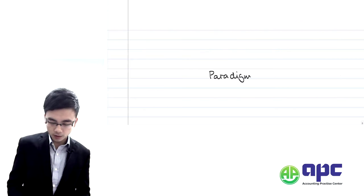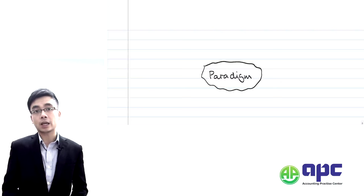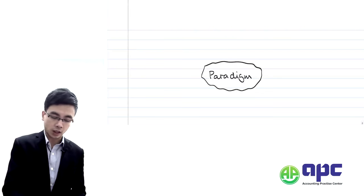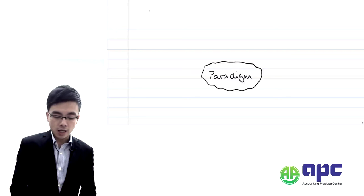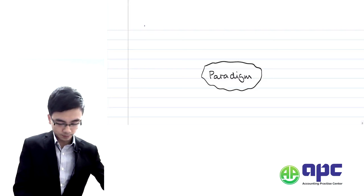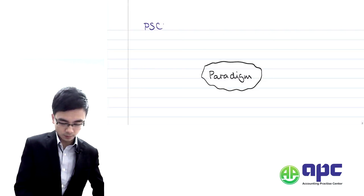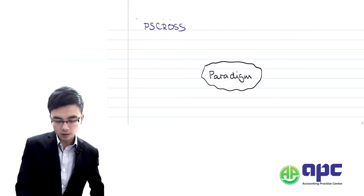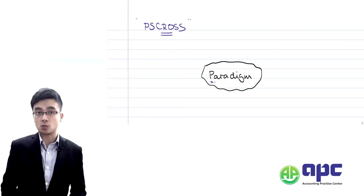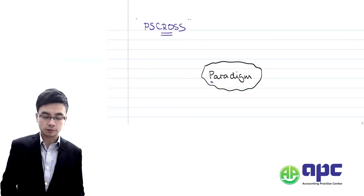Let's remind ourselves what the cultural web is. The cultural web states that the paradigm of the company will be affected by six other elements. We use a mnemonic called PS CROSS to summarise those elements. The first P is the paradigm — what the company does and what its mission is.